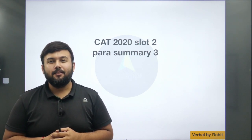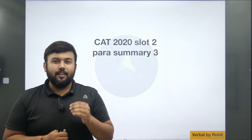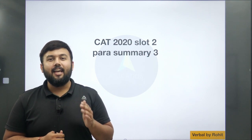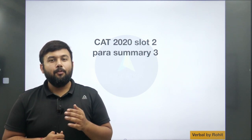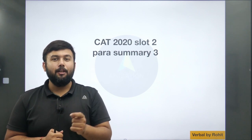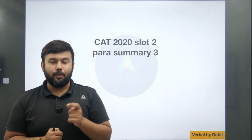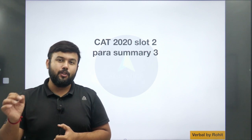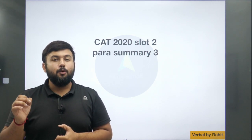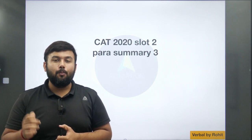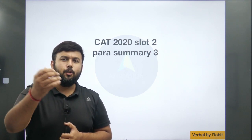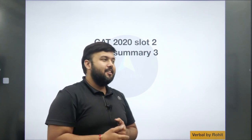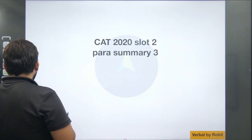Hello guys, welcome back to our session. In this session we'll be doing para-summary 3 of slot 2 asked in CAT 2020. Before I start, a small piece of information: from tomorrow we are starting live sessions for VA and RC on YouTube. Tomorrow I'll be taking a session on reading comprehension, so please make sure that you join that session.